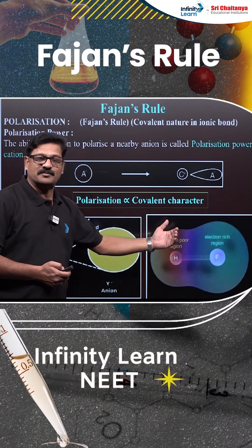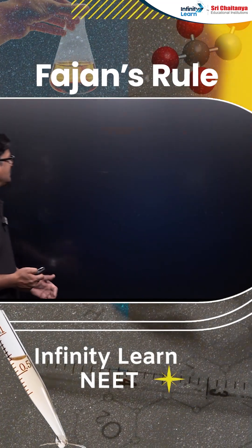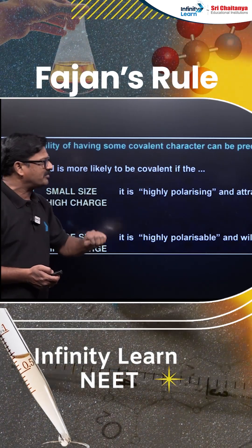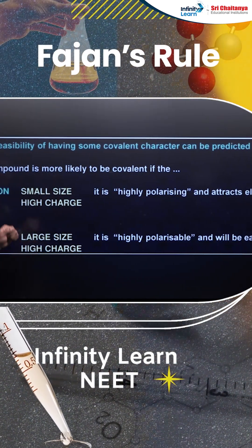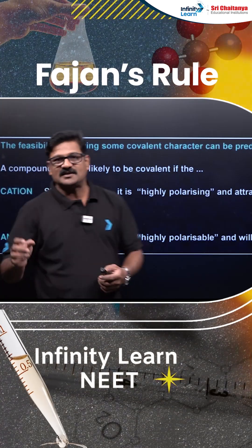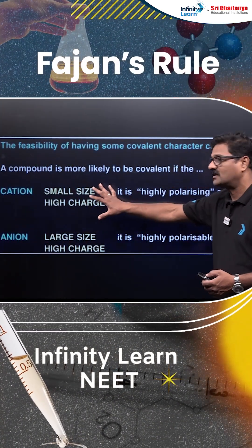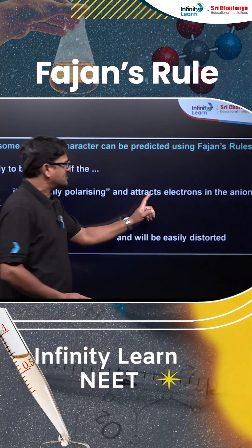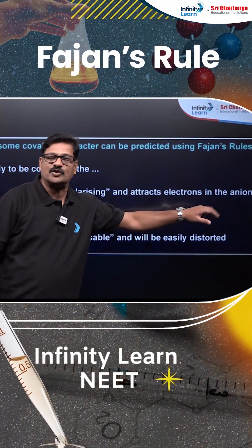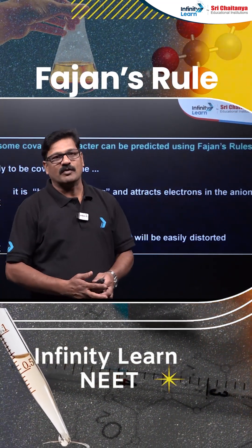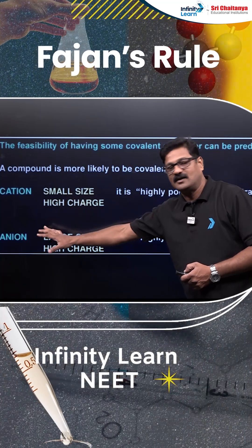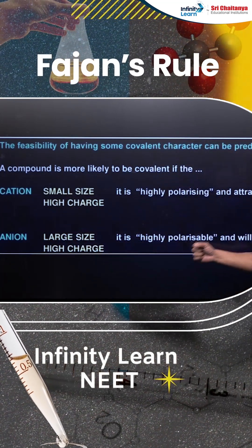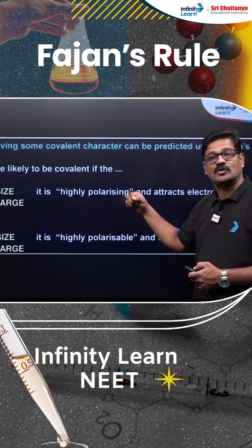Here you can see how the feasibility of covalent character can be predicted using Fajan's Rule. For cations, smaller size and higher charge make it highly polarizing, pulling electrons from the anion, resulting in more covalent character. For anions, larger size and higher charge mean they get more easily polarized.